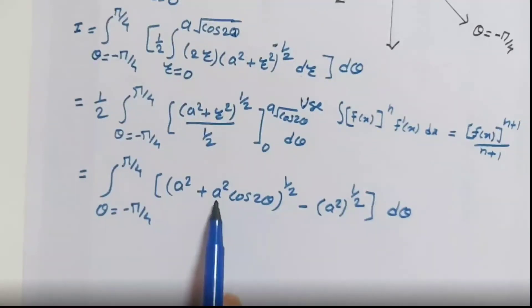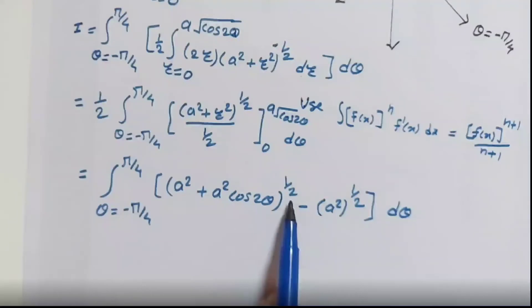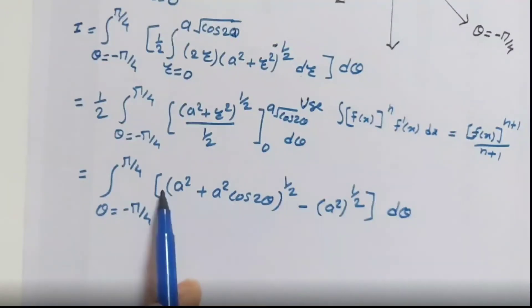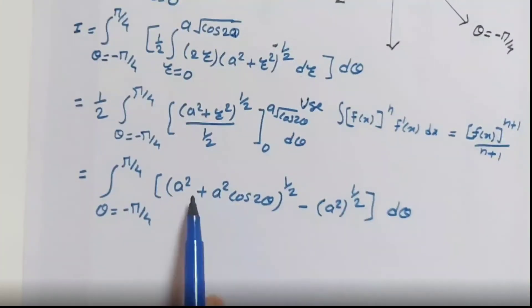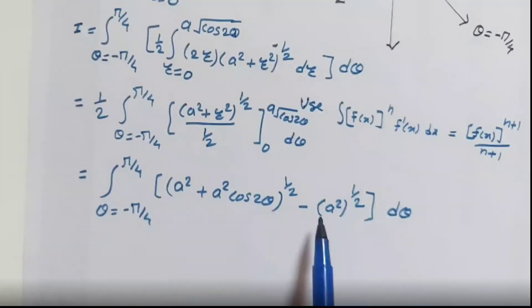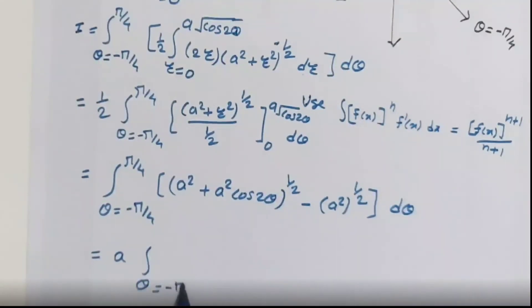Taking a² outside the bracket gives a factor of a. So we have a outside the integral, from −π/4 to π/4, of the remaining expression involving (1+cos2θ)^(1/2) minus 1, dθ.